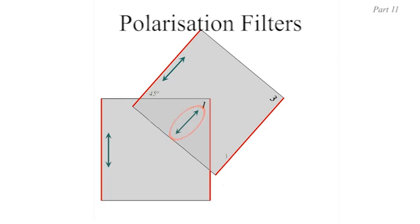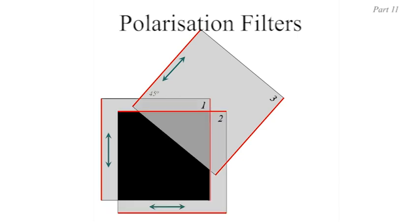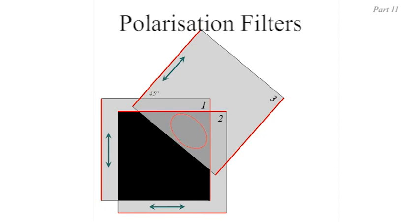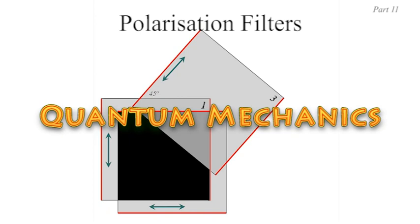The 45-degree polarized photons reaching the front filter — filter two, which has its axis horizontal — again face a 45-degree angle between their polarization and the filter axis, giving another 50% chance of getting through, with polarization changed to horizontal. It all makes sense: the region should be black with just filters one and two, but when you insert the middle filter at some angle between 0 and 90 degrees, light gets through according to quantum mechanics — even though classical physics couldn't explain it.